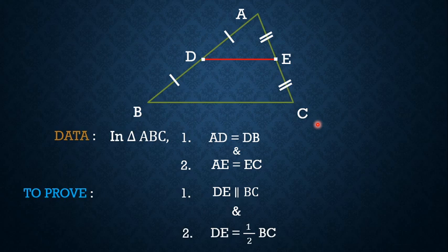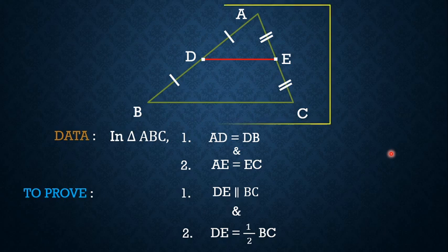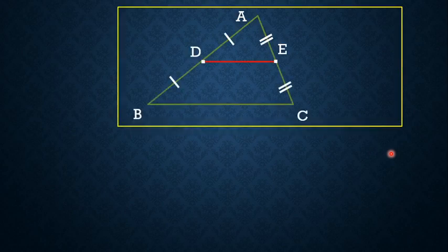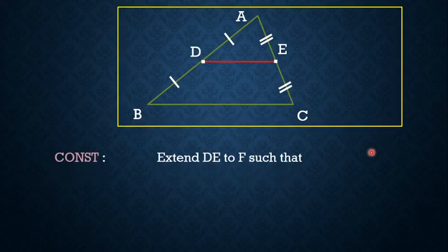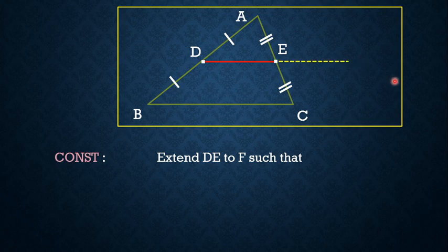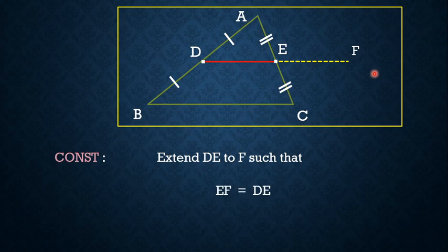We are clear on data and what to prove. This requires a simple construction. The construction is: extend DE to a point F such that EF is equal to DE.